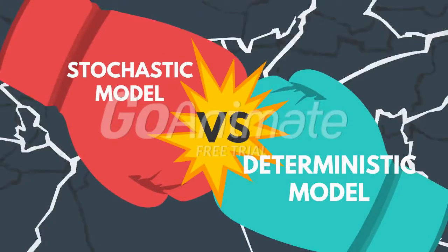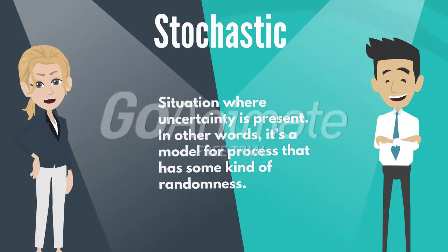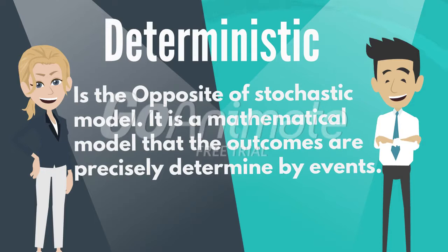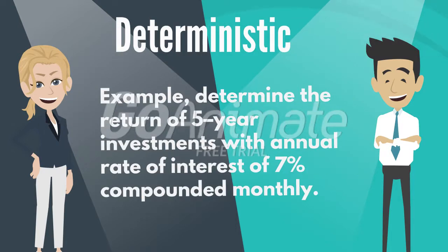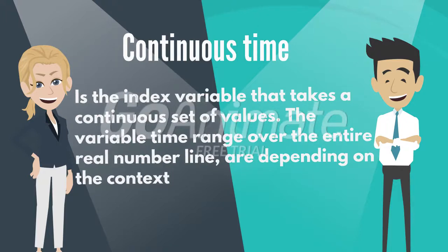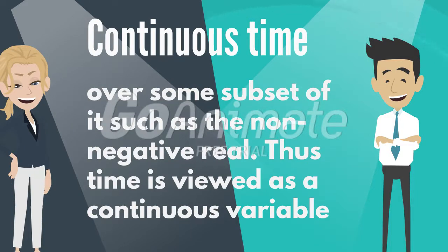Let's move on to stochastic and deterministic models. Stochastic refers to situations where uncertainty is present; in other words, it is a model for a process that has some kind of randomness. Stochastic models will produce different results every time a model is run. Examples include stock market and exchange rate fluctuations, and audio and video. A deterministic model is the opposite of a stochastic model — it is a mathematical model where outcomes are precisely determined by the event. For example, determining the return of a five-year investment with an annual rate of interest of 7% compounded monthly. A discrete time model uses an index variable that takes a discrete or distinct set of values, for instance digital signals. A continuous time model uses an index variable that takes a continuous set of values, where the variable time ranges over the entire real number line, or some subset of it such as the non-negative reals, and thus time is viewed as a continuous variable.